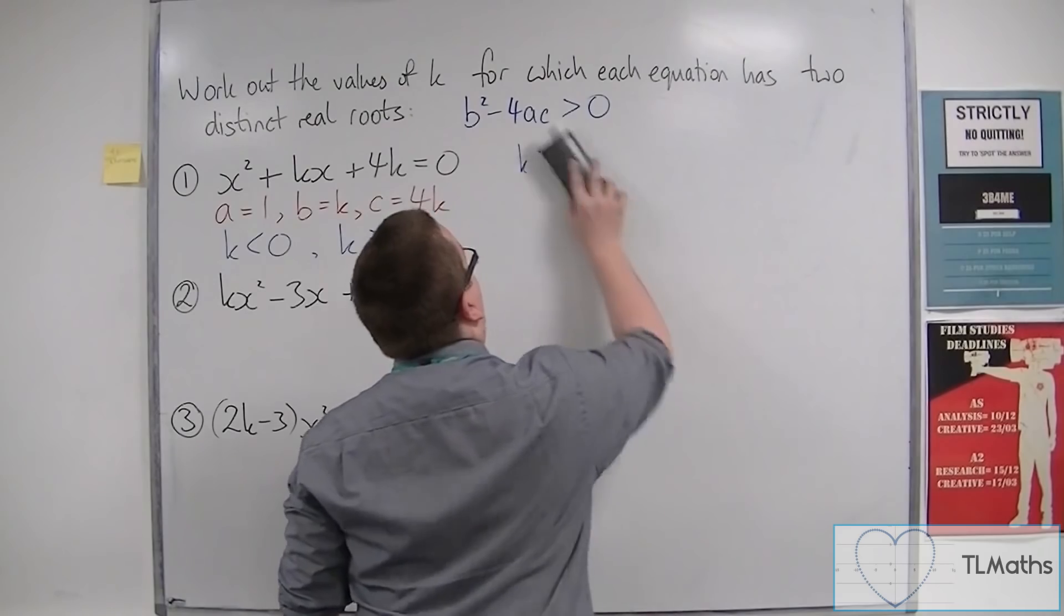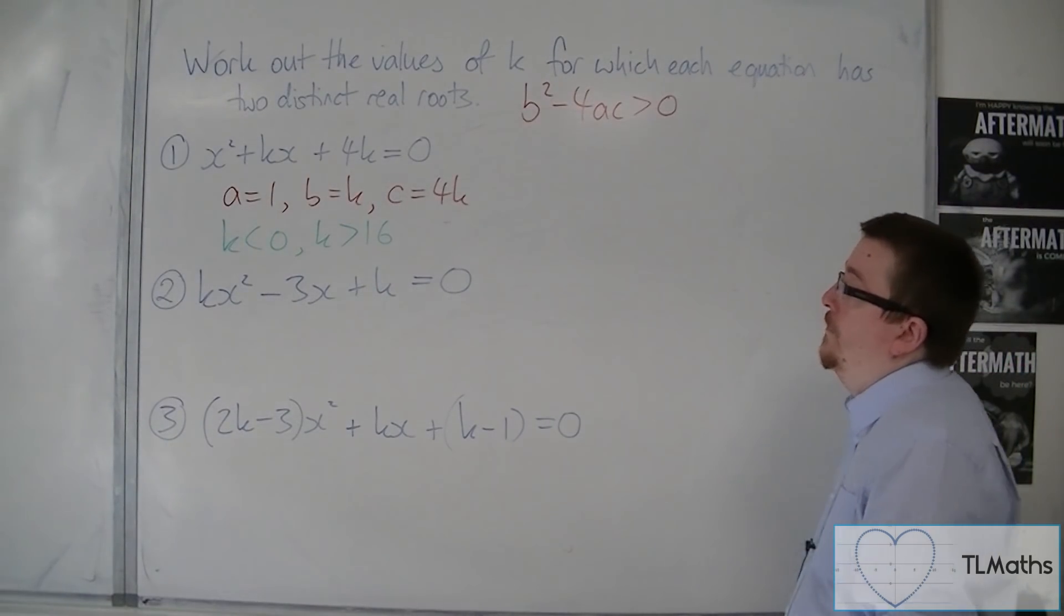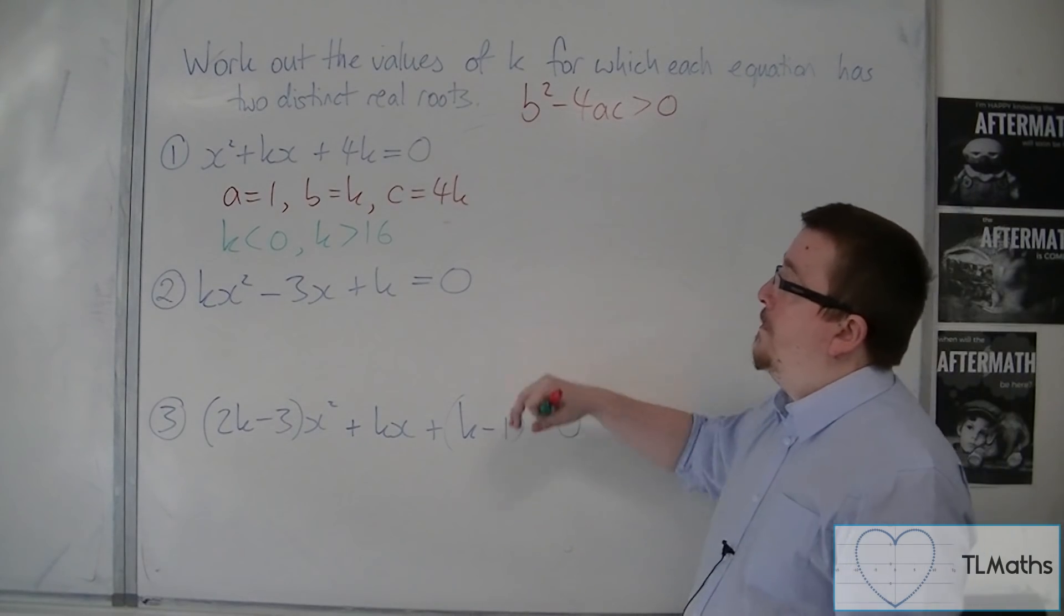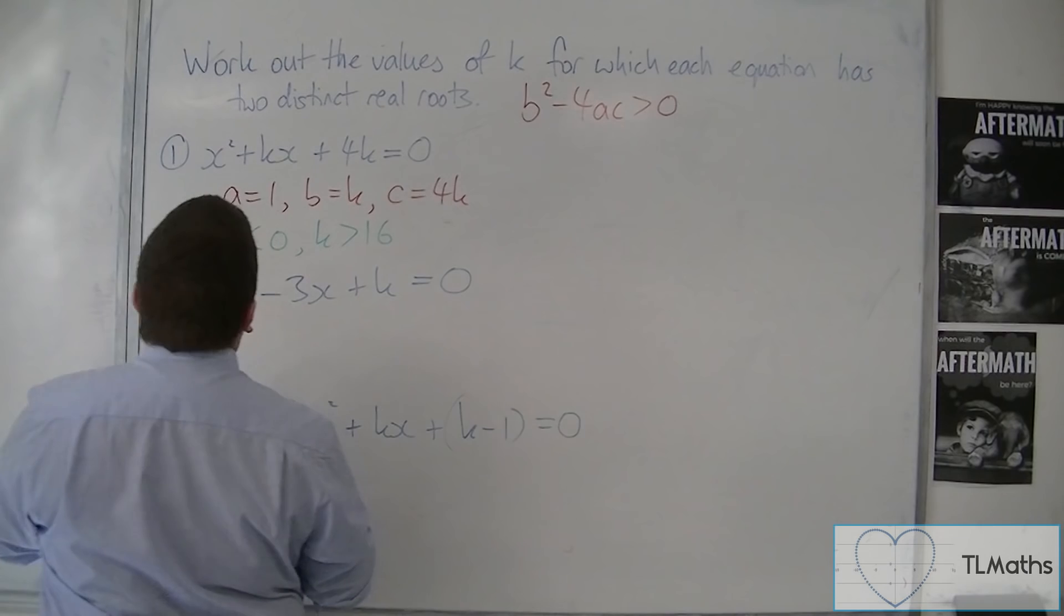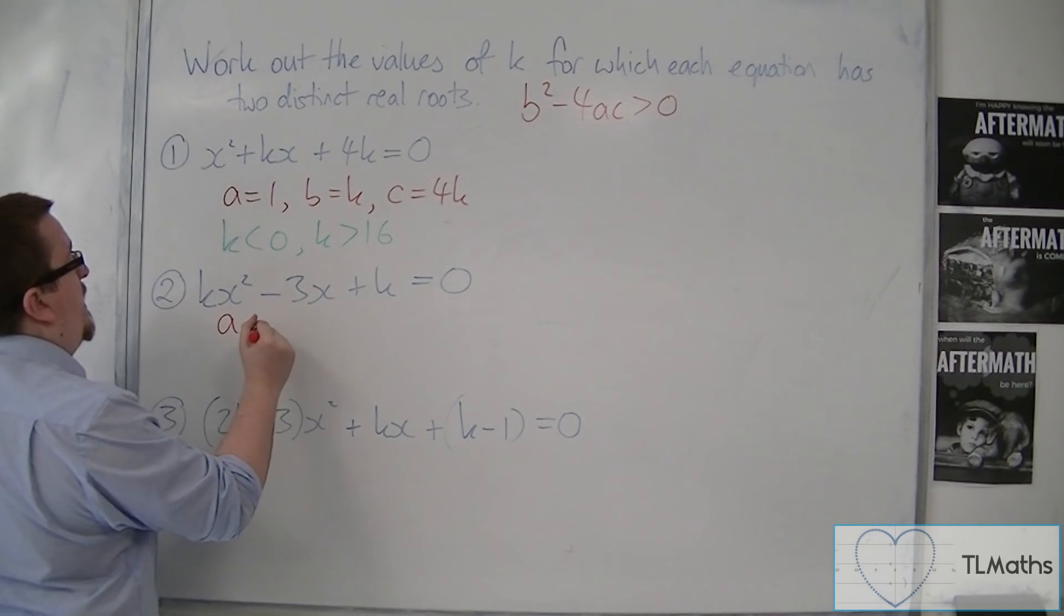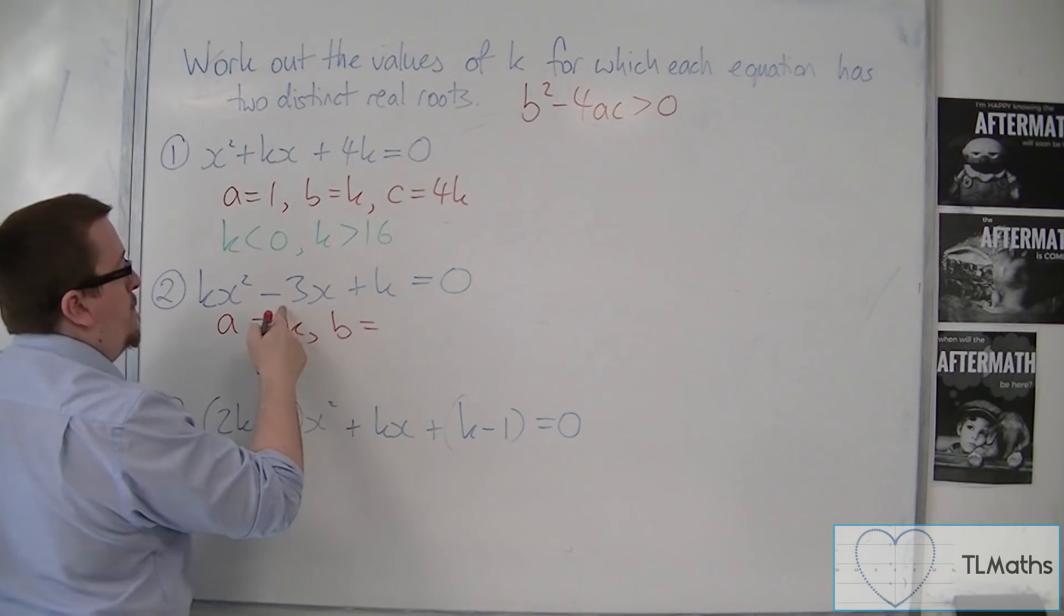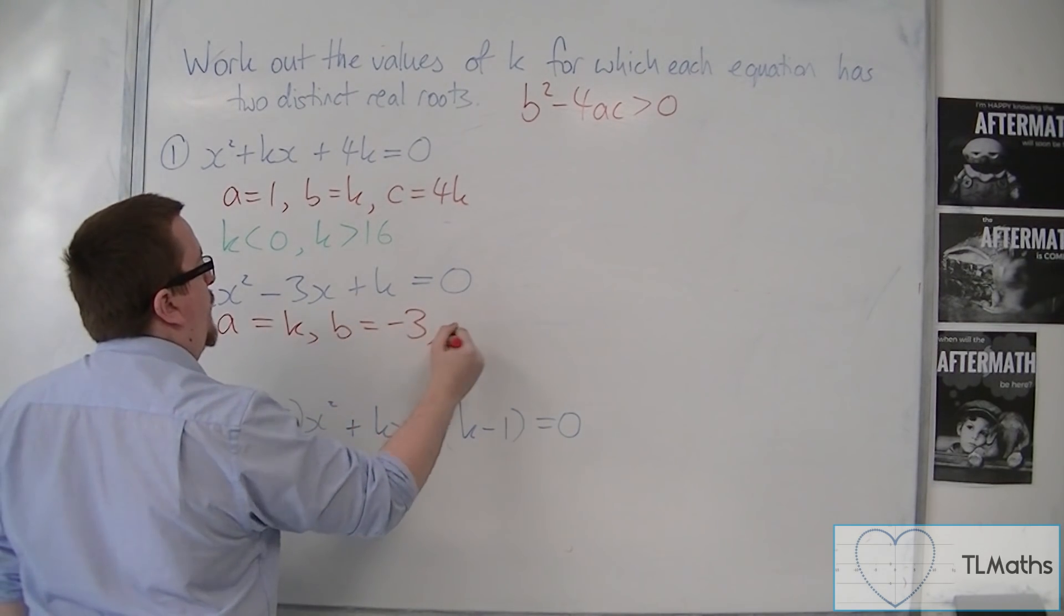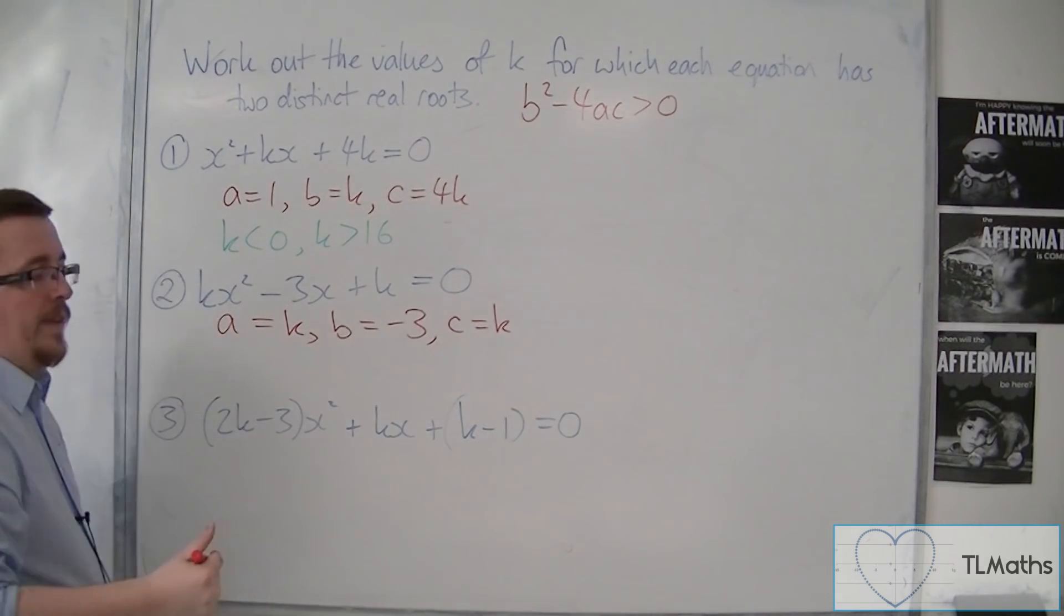Let's look at the second one. So let's have a look at question two. We have kx squared minus 3x plus k. So first thing we're going to do is identify a, b and c. So a is going to be equal to k, b will be equal to minus 3, and c will be equal to that k, that bit that's left over there.